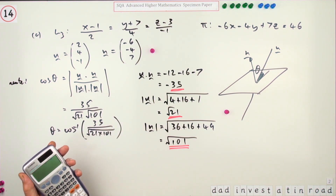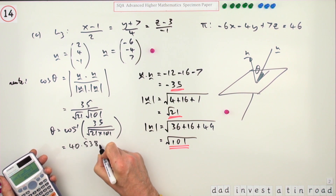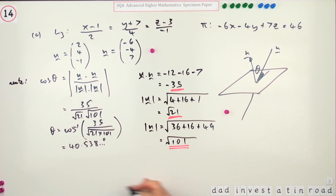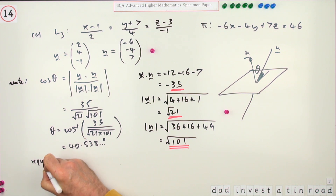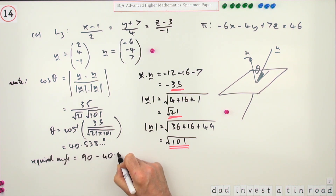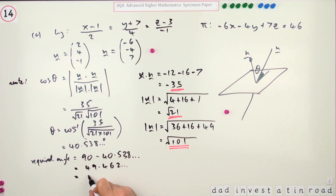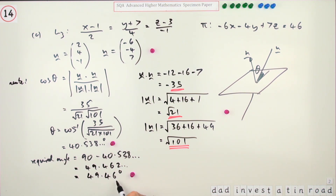Taking the absolute value, cos theta equals 35 over root 21 times root 101, giving theta as inverse cos of 35 over root 2121, which comes out to 40.538 degrees. That's the acute angle to the normal. The required angle between the line and the plane is the complement: 90 minus 40.538, which equals 49.46 degrees to two decimal places. Getting the acute angle to the normal is a mark, and finding the complement as the final required angle is the last mark.